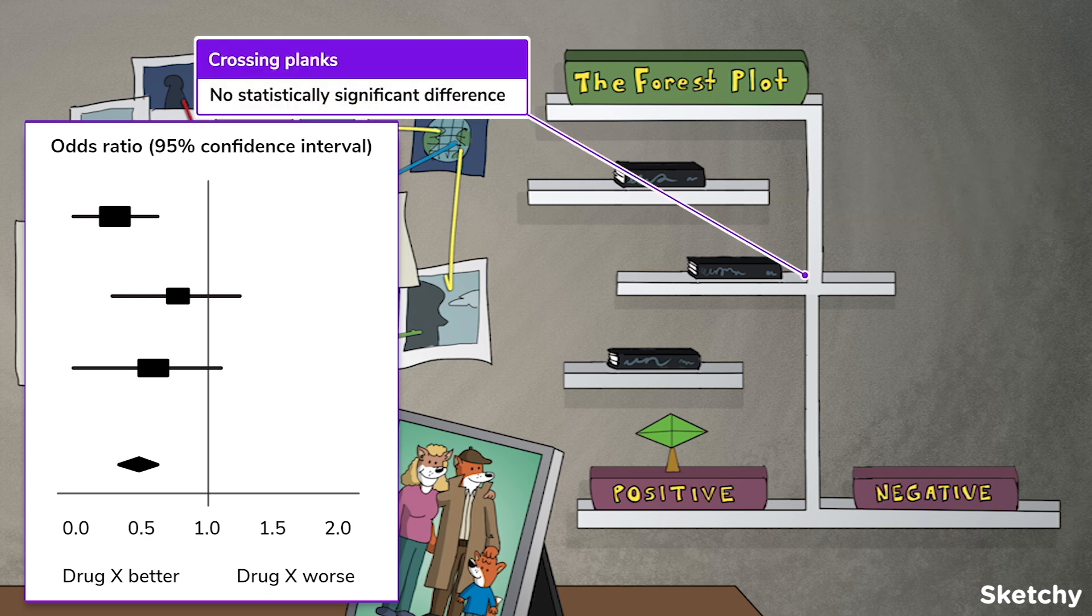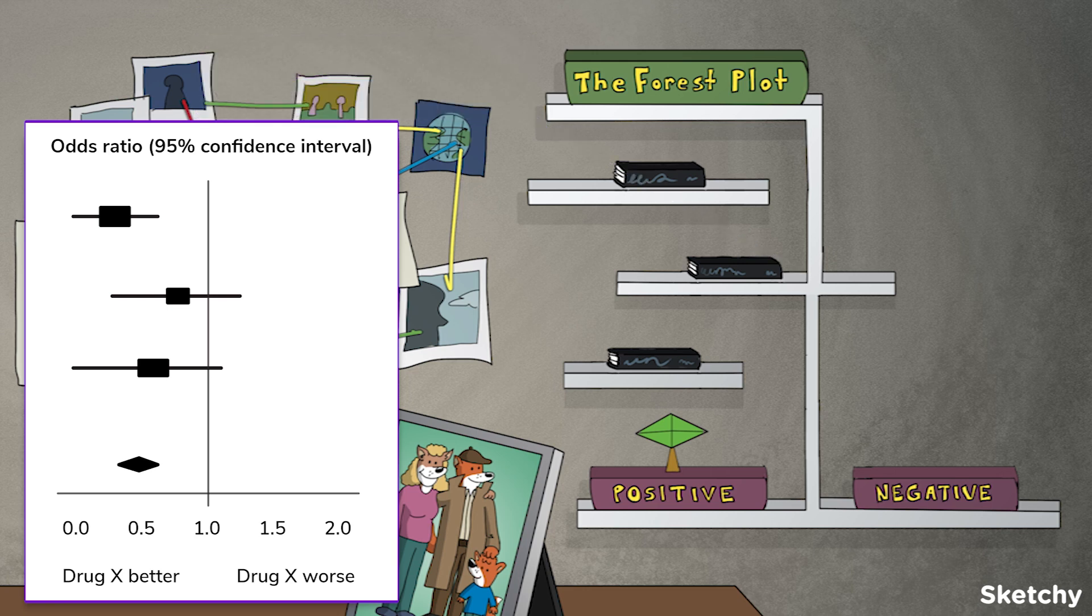Hmm, but why are some of these shelves crossing the center plank in our design? Remember, if the 95% confidence interval crosses 1, i.e. the null, then there is no statistically significant difference between your comparator groups.